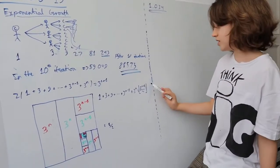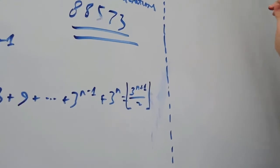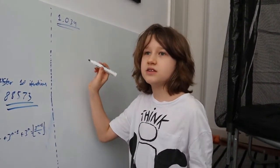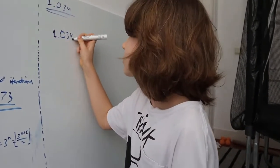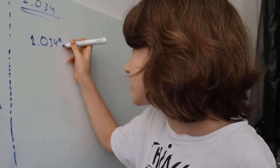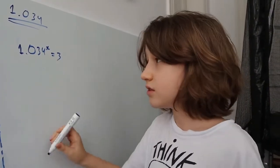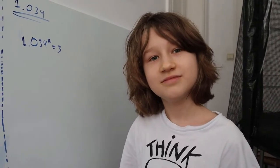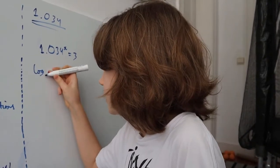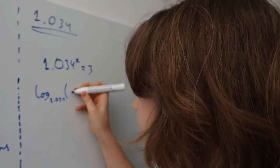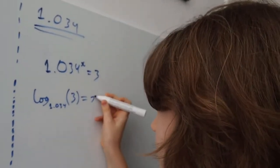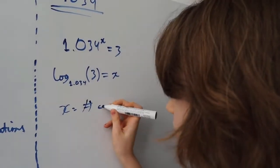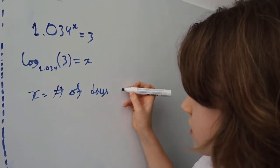Every iteration it multiplies by three, whereas every day it multiplies by this number. What we need to do is: after how many days did one iteration complete? So 1.034 to the power of the number of days - I'm going to call it x - is equal to three. That should remind you of something: logarithms. If we take the log base 1.034 of three, that's going to equal x. And what is x? Let's calculate it.